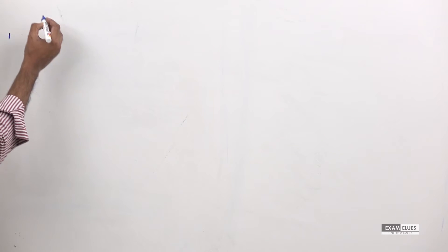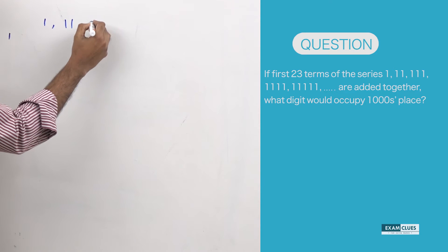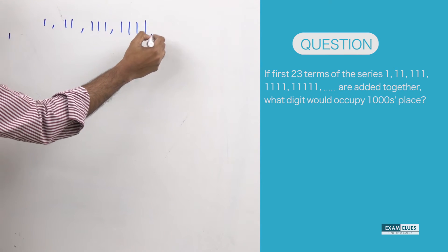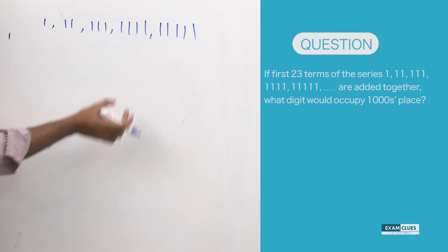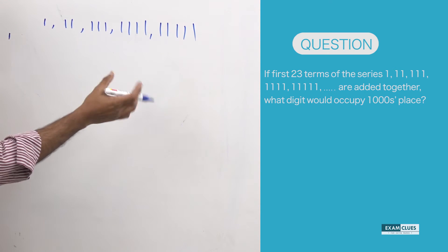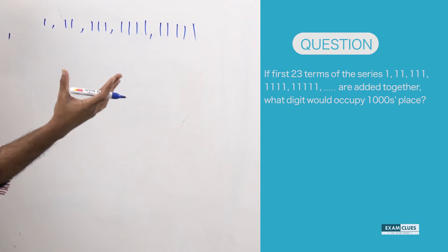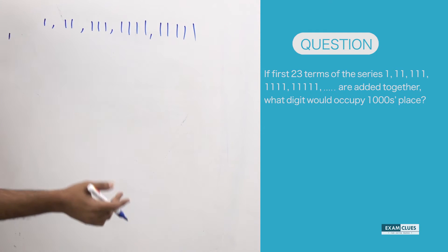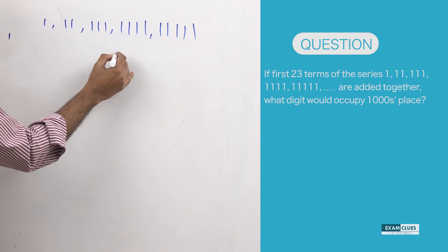Let's write the series: 1, 11, 111, 1111, 11111, and so on. The nth term has n ones — the 5th term has 5 ones, the 10th term has 10 ones, and the 23rd term would have 23 ones. The question is: if all of these are added together, what is the digit in the thousands place?